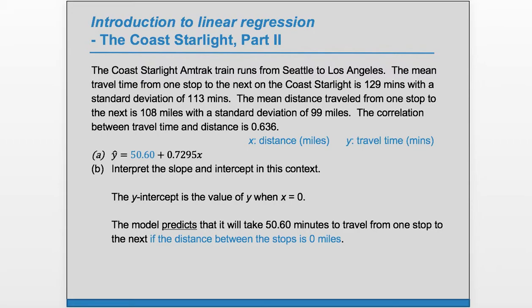So it's the predicted value of y when x is zero. Here, x being zero means zero miles, so that doesn't make sense. So zero here is not a reasonable value for x.